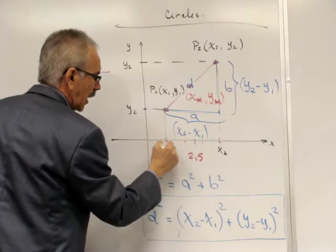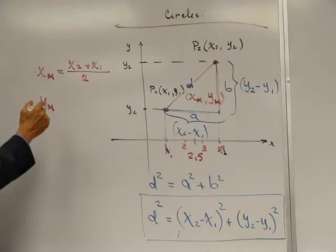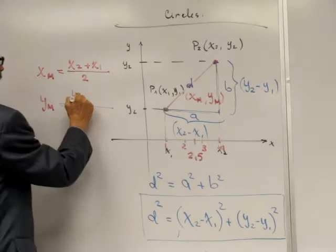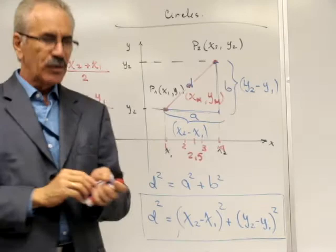So we have here 1, 2, 3, 4. Exactly the same for the middle point in the Y direction, we can calculate its position using (Y2 plus Y1) divided by 2. Now we have 3 equations that we can use in order to develop the equation of a circle.